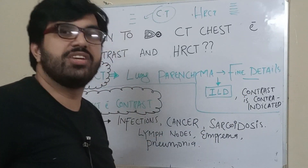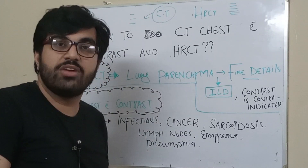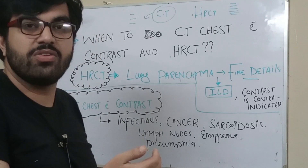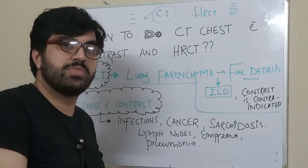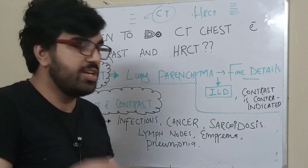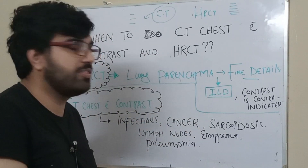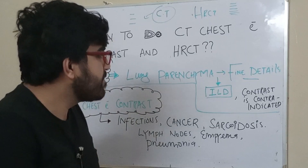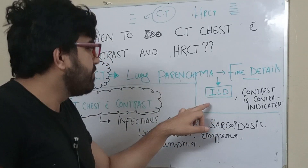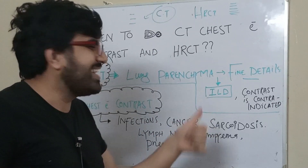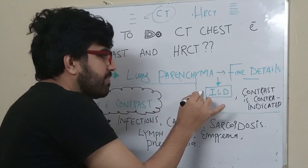We also use HRCT when contrast is contraindicated — for example, when a person has CKD or acute renal failure. Or when the patient cannot wait, because CT with contrast takes time. HRCT can be done within minutes; you are not supposed to take extra preparation time for HRCT.